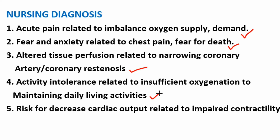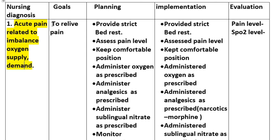Nursing Diagnosis number 5: Decreased cardiac output related to impaired contractility. Goals: balance oxygen supply and demand.